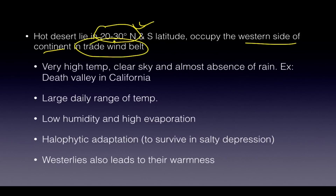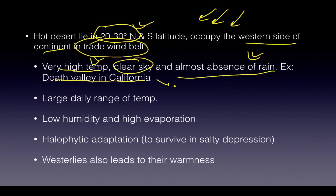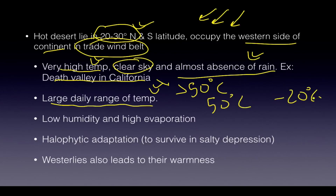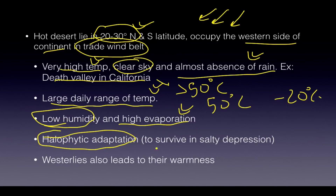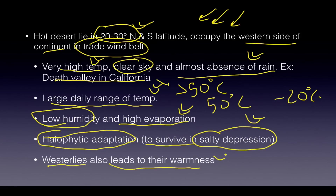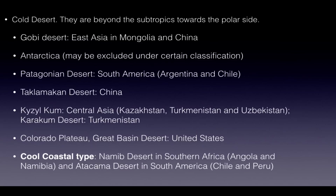Hot deserts lie between 20–30 degrees north and south latitude on the western side of continents because trade winds take away moisture, leading to dry conditions, high temperatures, clear skies, and almost complete absence of rain. Death Valley in California can reach over 50°C. There is a large daily temperature range — daytime can be 50°C while nighttime can drop to minus 20°C. Low humidity, very high evaporation, and alkalization of soil leads to halophytic adaptations to survive in salty conditions.